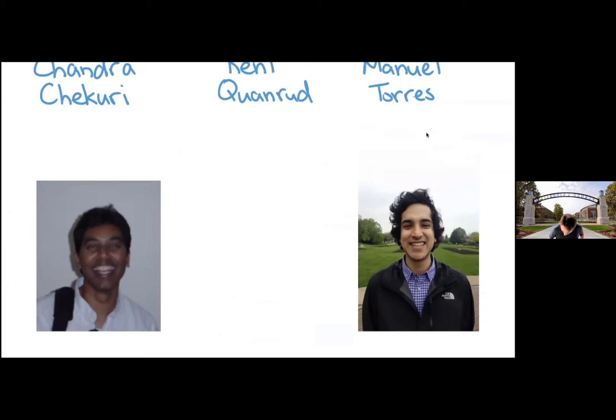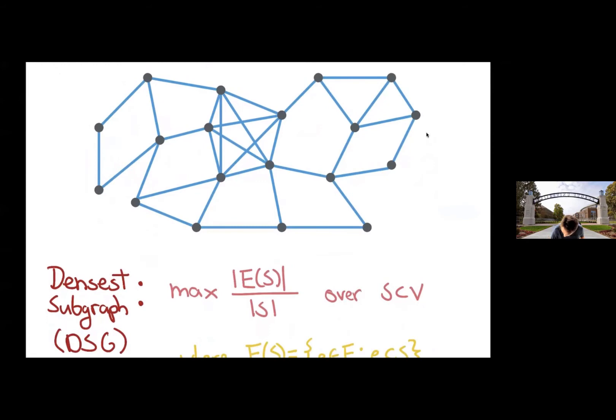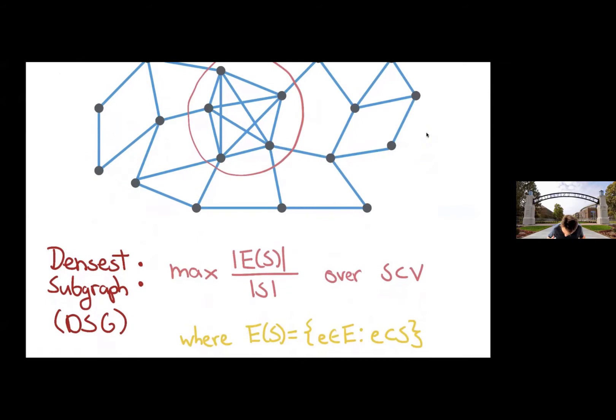So a densest subgraph, I'm sure everyone here is at least somewhat familiar with it, but the density of a graph, of course, is the number of edges divided by the number of vertices. Here's for the most part a pretty sparse graph, and a densest subgraph is to find a subgraph that's most dense. Here's a relatively dense patch of the graph. It's a clique on five vertices.